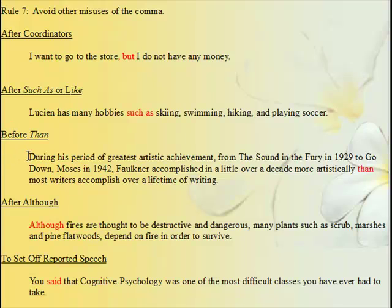Before 'then': during his period of greatest artistic achievement, from The Sound and the Fury in 1929 to Go Down Moses in 1942, Faulkner accomplished in a little over a decade more artistically than most writers accomplish over a lifetime of writing — notice there's no comma before 'than.' After 'although': although fires are thought to be destructive and dangerous, many plants such as scrub, marshes, and pine flatwoods depend on fire in order to survive — do not put a comma after 'although.'